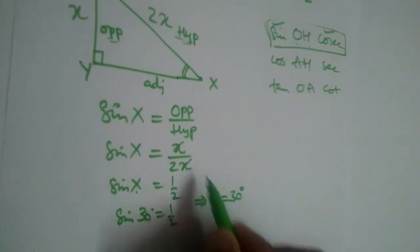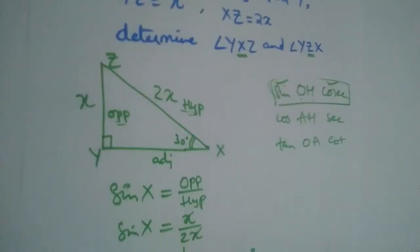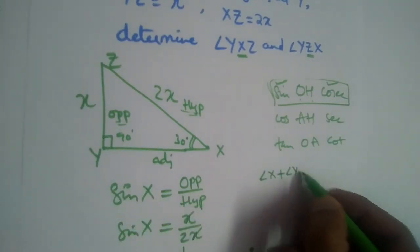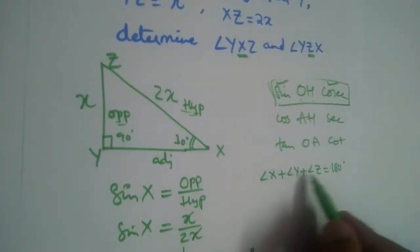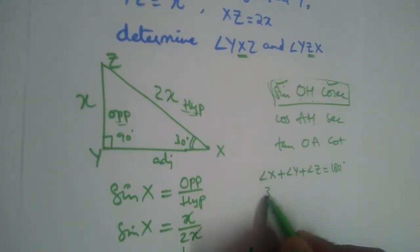So this is 30 degrees, all right. And we know this is 90 degrees. So sum of all three angles in a triangle should be equal to 180 degrees, right? Angle X, angle Y, angle Z should be equal to 180 degrees. We got angle X as 30 degrees, angle Y was given as 90 degrees. We need to find angle Z.